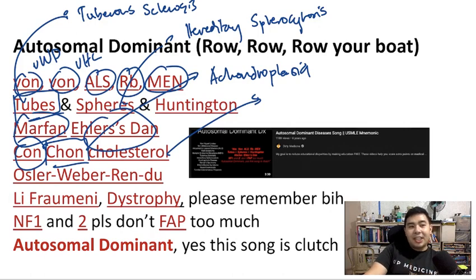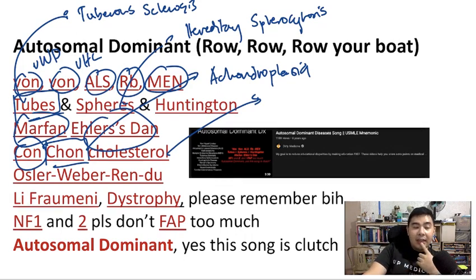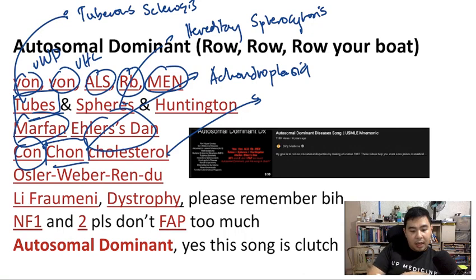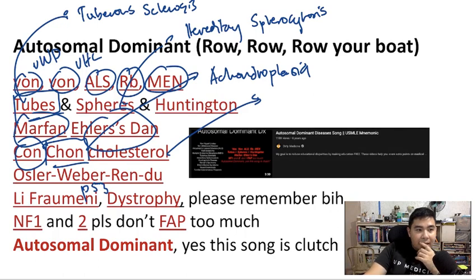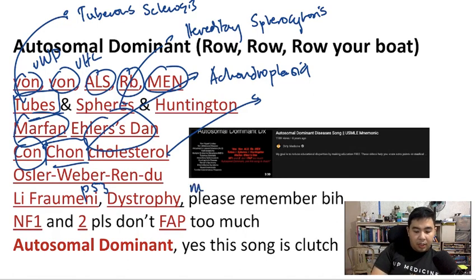Osler-Weber-Rendu is a rare disease — hereditary hemorrhagic telangiectasia. Li-Fraumeni is a disease involving DNA repair affecting P53. "Dystrophy" here refers specifically to myotonic muscular dystrophy.